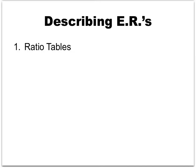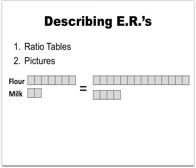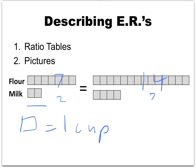Let's talk about some different ways to describe equivalent ratios. One way is with a ratio table, as we've been doing. Another way is with pictures. Here, each box in the picture equals 1 cup. We see 7 boxes for the flour and 2 boxes for the milk, giving the ratio 7 to 2. Over on the other side, we have 14 boxes of flour and 4 boxes of milk, illustrating that ratio of 14 to 4 — showing these ratios are equivalent.